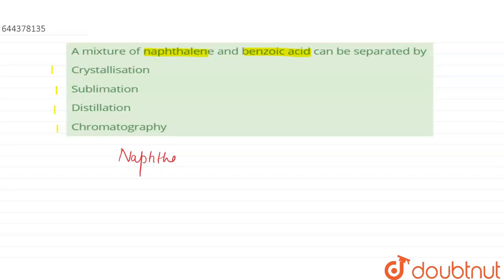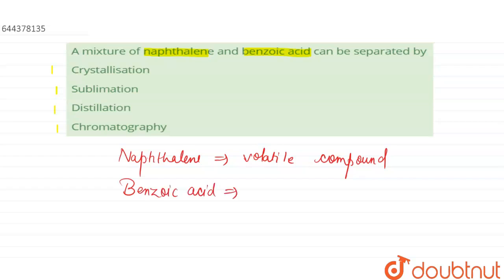Naphthalene is a volatile compound, and benzoic acid is a non-volatile compound. Naphthalene sublimates easily because it is made of non-polar molecules that are held together by van der Waals intermolecular forces.